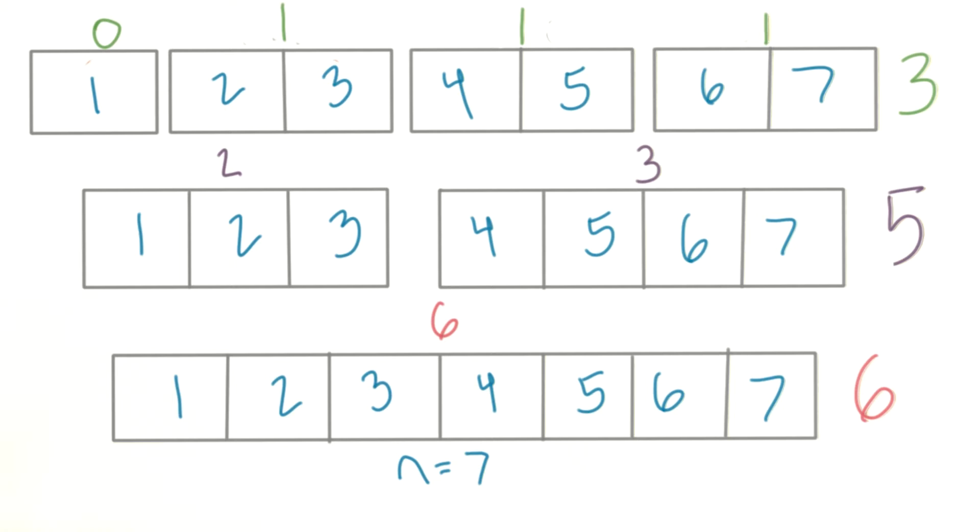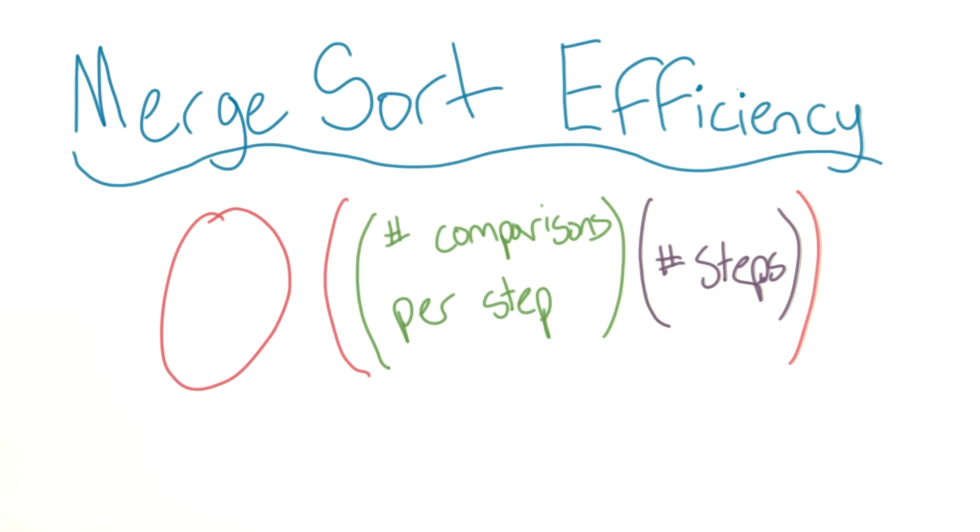So to get the runtime of a sorting algorithm, you can normally multiply the number of overall iterations by the number of comparisons at each iteration. In bubble sort, we were doing n comparisons and n steps. We just proved that we're doing at most n comparisons at every step. But how many steps overall are we doing?